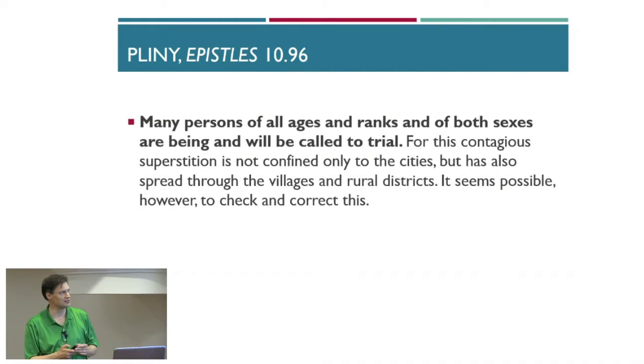But then he talks about people who've given up as Christians and tell him what they've done. They affirmed, however, the whole of their guilt or error was that they were in the habit of meeting on a certain fixed day before it was light and of singing in alternate verses a hymn to Christ as to a god, Latin quasi deo, and of binding themselves by a solemn oath not to any wicked deeds, but never to commit fraud, theft or adultery, never to falsify their word.